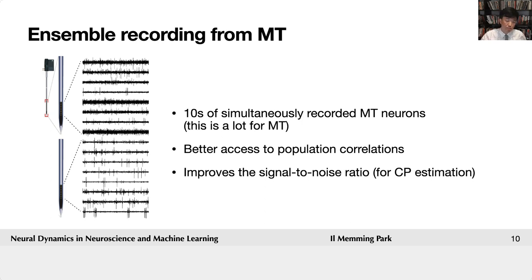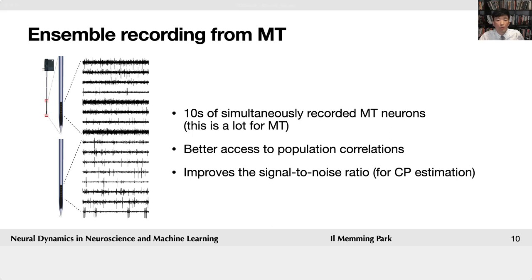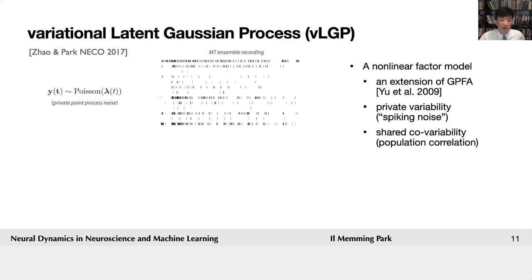This ensemble data allows us to do two things: to better access the population correlation structure and improve the signal-to-noise ratio for estimating choice probability. We can do this using statistical modeling techniques. The one we're going to use is developed by Yuan Zhao and myself — it's called the Variational Latent Gaussian Process Model, or VLGP for short. It's a type of factor model, similar to factor analysis or GPFA — the Gaussian Process Factor Analysis. It's essentially an extension that allows us to use spike trains.